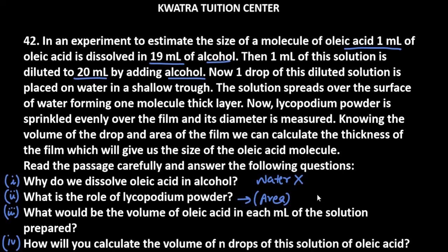We put the oleic acid in each ml of the solution prepared. So here you can see that 1 ml of the solution is diluted to 20 ml by adding alcohol. So you will take 1 by 20. So this will get 1 over 400 ml.